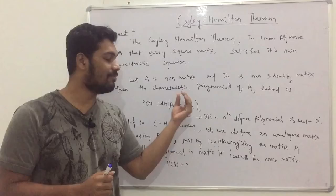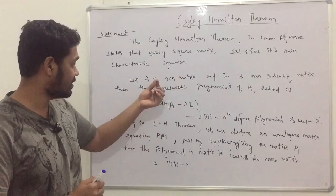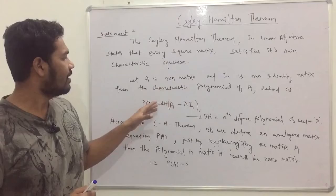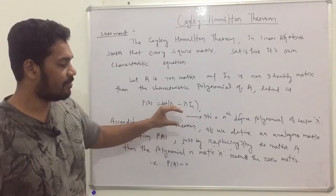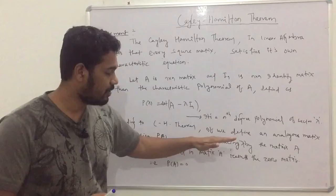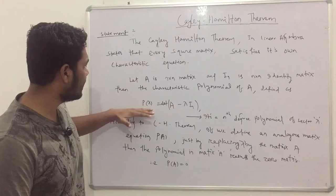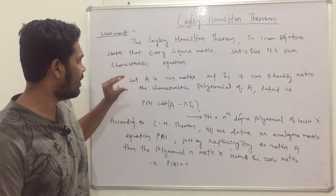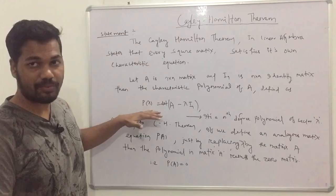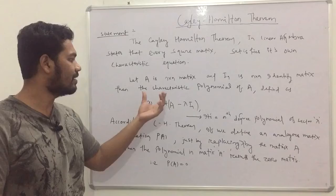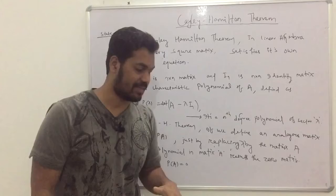So when you find the characteristic polynomial of a matrix, P(λ) is an nth degree polynomial of the scalar λ. The Cayley-Hamilton theorem states that if you define an analogous matrix equation P(A) — by replacing the scalar λ with the matrix A — then P(A) equals the zero matrix. That is, every square matrix satisfies its own characteristic equation, P(A) = 0.